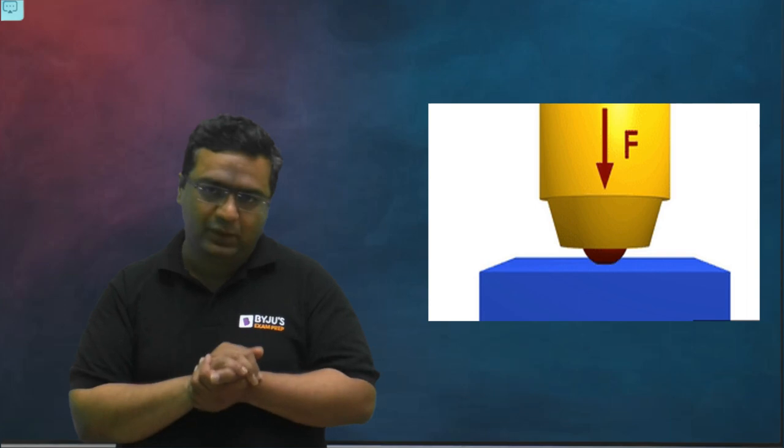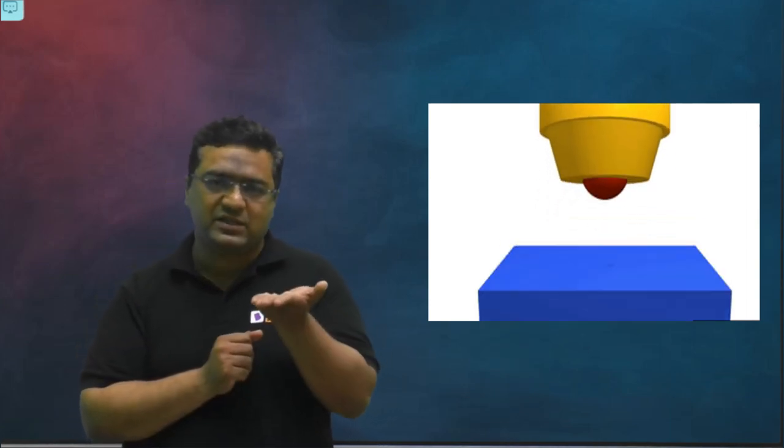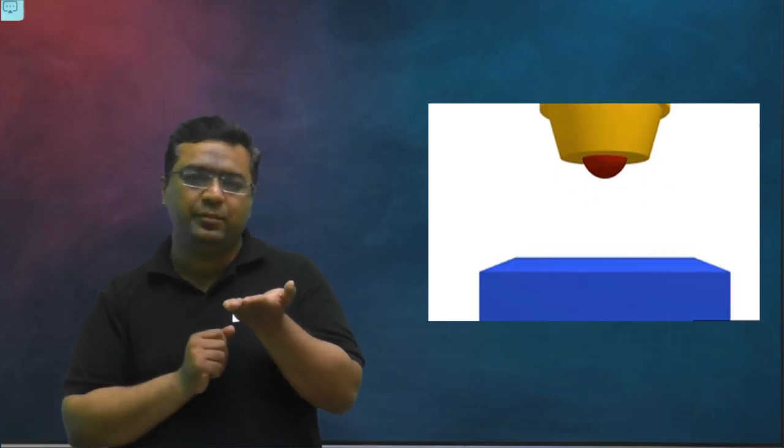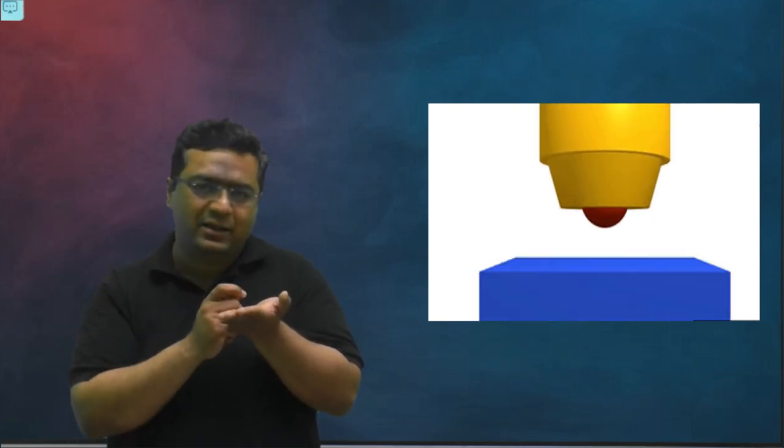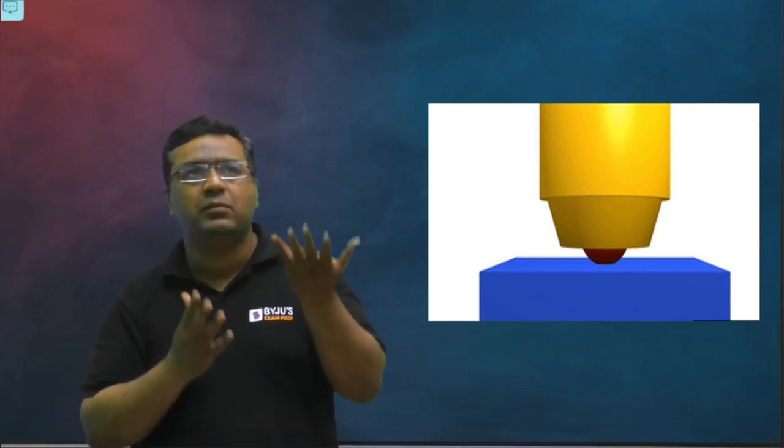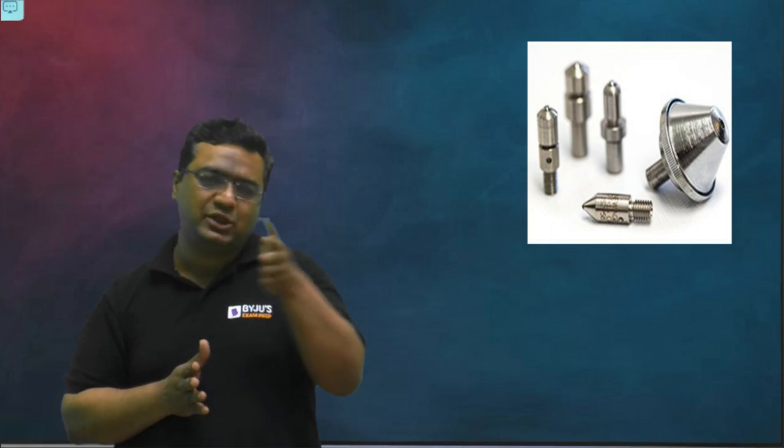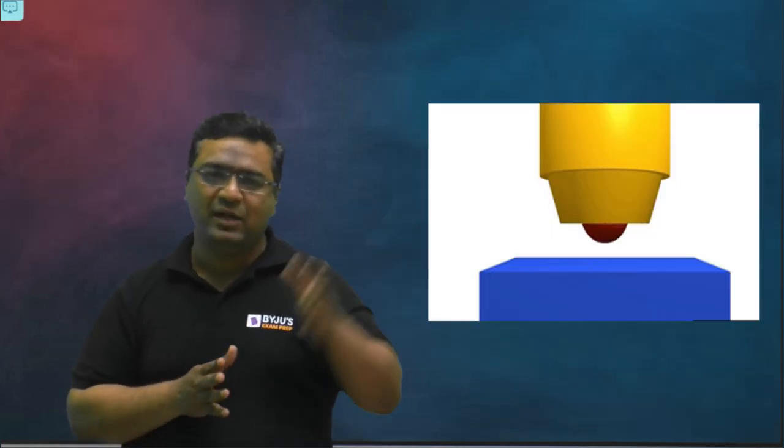In our case, pencil was indenter. So you will take a surface whose hardness is to be measured, then you will take an indenter. That indenter may be of steel ball type of shape, maybe some diamond cone indenter can be there. Based on the test you are using, the indenter shape will change. When you will be having the indenter, that indenter will be pressing the surface.